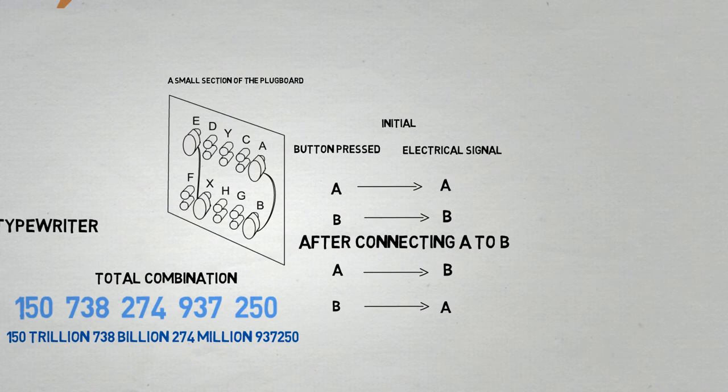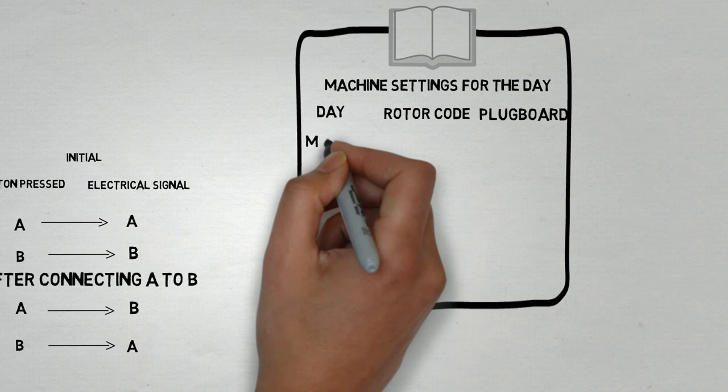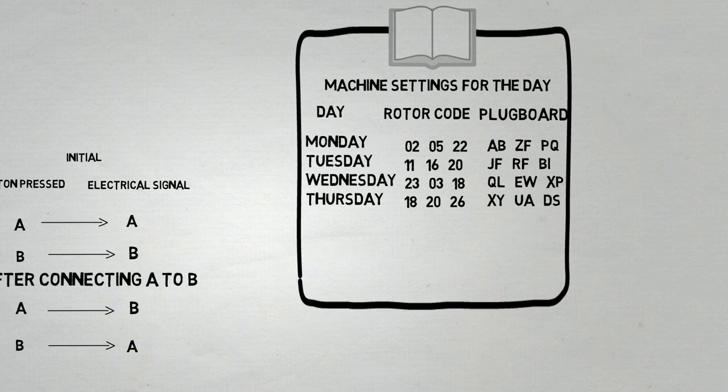In order to decrypt these messages, the receiver would have to refer to a code book. This code book would tell them how they should set the three rotors and how to connect the wires in the plug board for a particular day of the month.